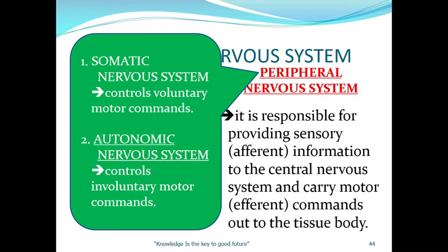What if your body reacts involuntarily even when you don't want it to? For example, you become nervous and you start sweating. You don't want to sweat, but your body reacts and you are perspiring. That is under the autonomic nervous system — it controls involuntary motor commands.